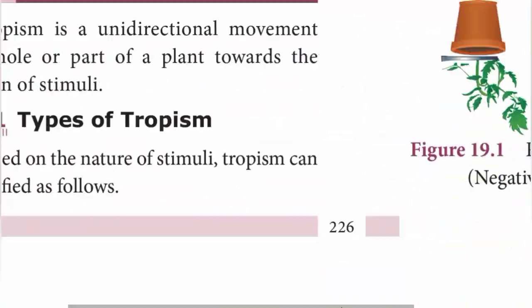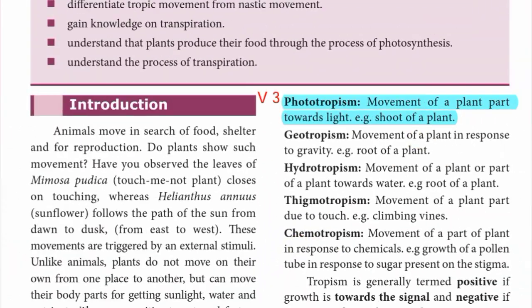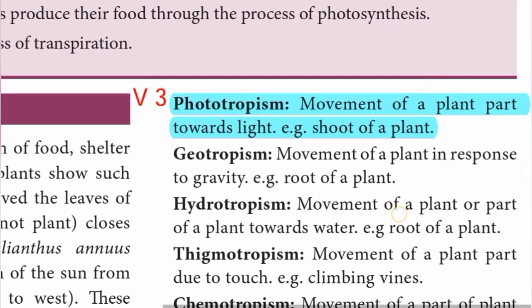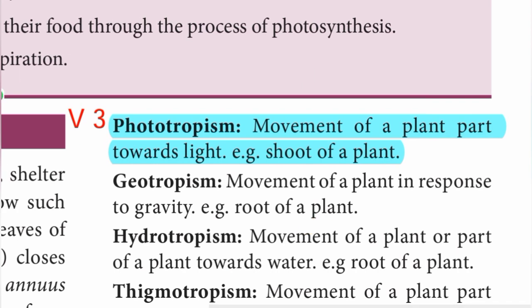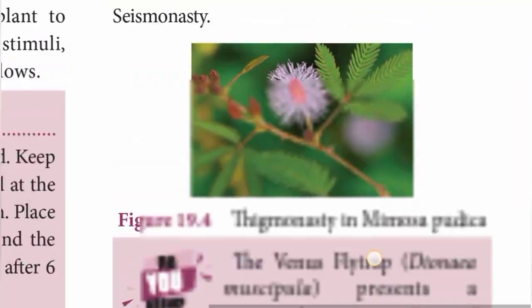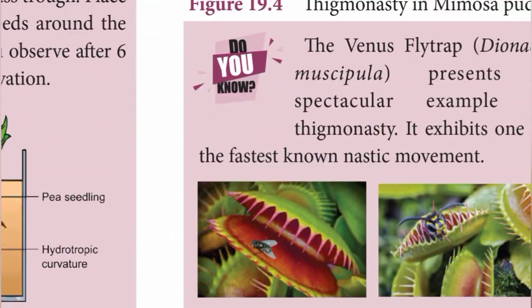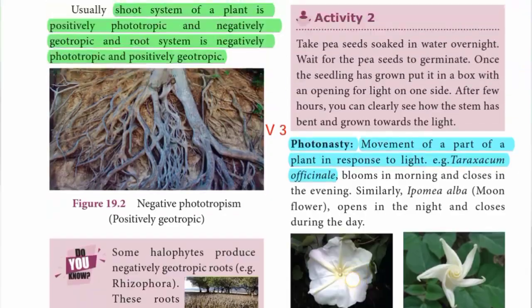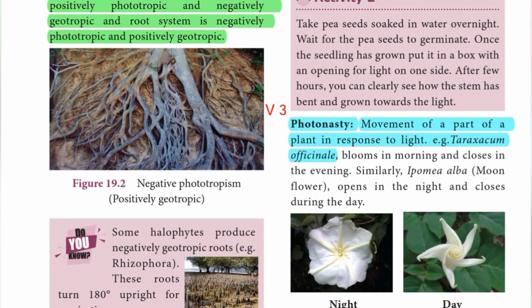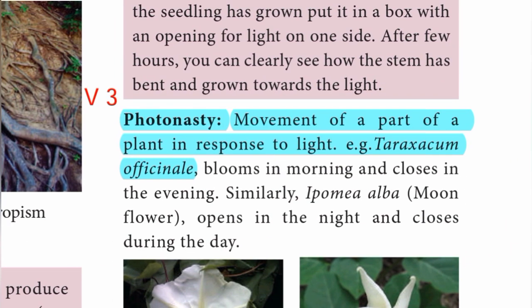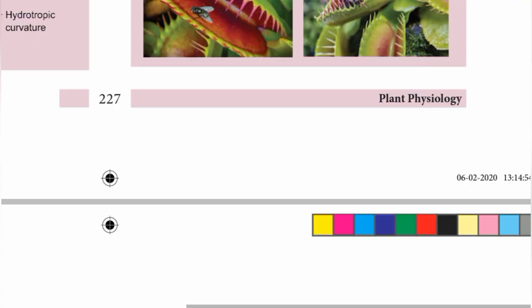Third one: differentiate phototropism from photonasty. From pages 226-227: phototropism is the movement of a plant part towards light, example - shoot of a plant. Photonasty is the movement of a part of a plant in response to light, example - Taraxacum officinale.